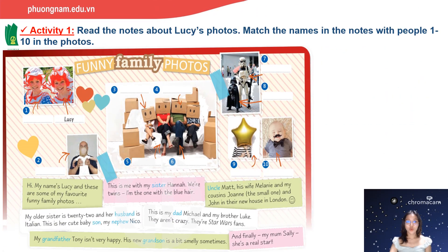Activity one: read the note about Lucy's photos. Match the names in the note with people from one to ten in the photos. Chúng ta đi đến hoạt động đầu tiên. Trong hoạt động này mình sẽ đọc những đoạn note của bạn Lucy, và sau đó tìm những cái tên của từng người tương ứng để điền vào chỗ trống từ 1 cho đến 10. Now let's read the notes with me.